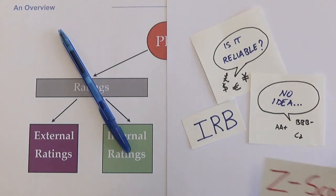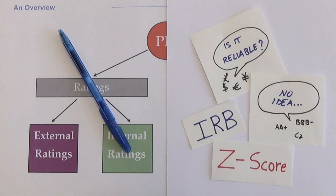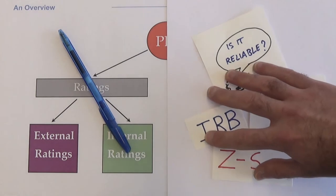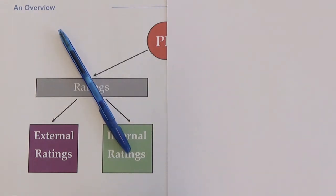An important example of internal ratings method is Altman's Z-score, which is based on discriminant analysis. Most internal ratings methods are just modifications of the original Z-score.